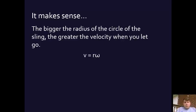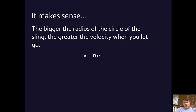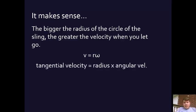The bigger the radius of the circle, the greater the velocity when you let go of the slingshot, because it's covering more ground. Here's how the formula turns out: the tangential linear velocity is going to equal the radius times the angular velocity. V equals r times omega. The tangential velocity — the linear velocity at the outside of a circle — equals the radius times the angular velocity.